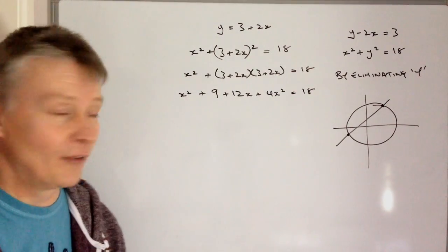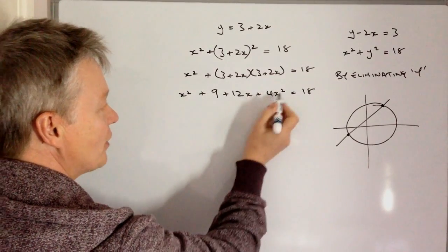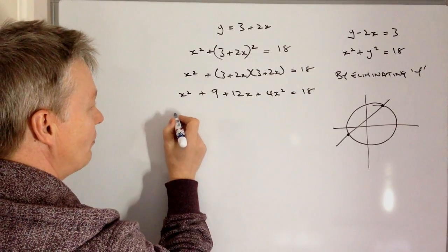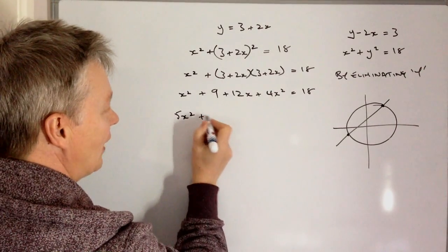Okay, let's just now gather up the like terms. So I'm going to put x squared plus 4x squared together, so that becomes 5x squared, and then I've got 12x on its own.